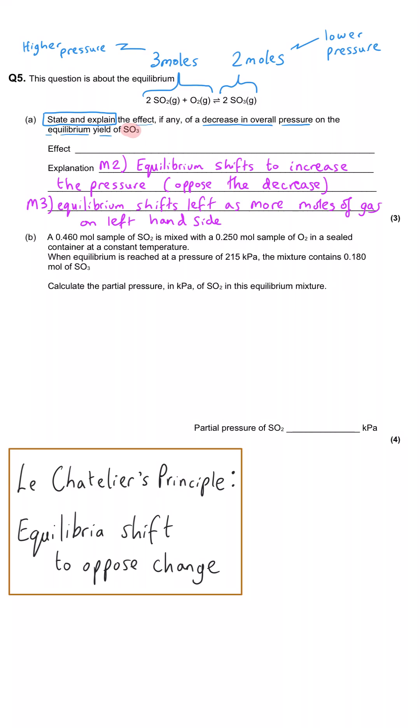And then now we can go back to our conclusion, which is the effect, which is that since it is shifting left, that means it will be using up the SO3 to create those things that are shown as reactants, and so the yield will decrease.